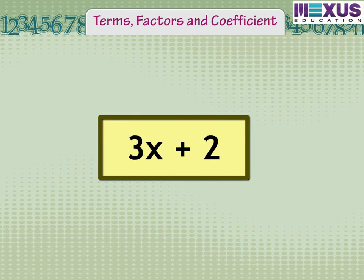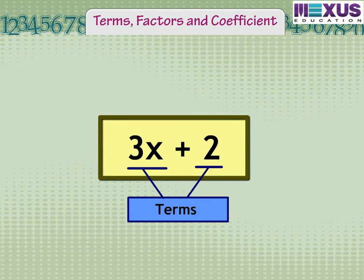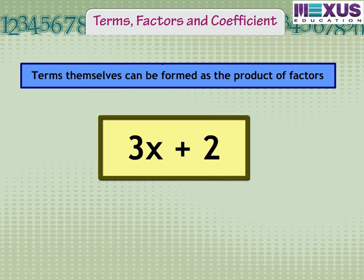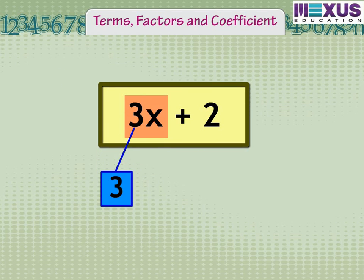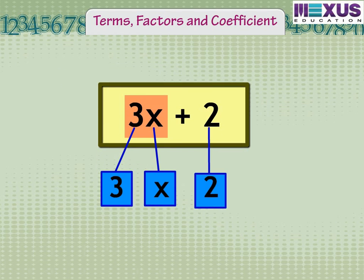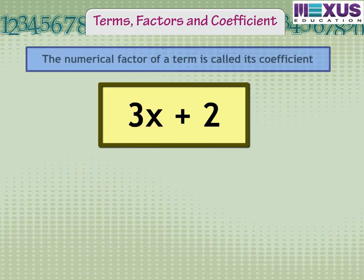Look at the expression 3x plus 2. This expression is made up of two terms: 3x and 2. Terms are added to form expressions. Terms themselves can be formed as the product of factors. Here the term 3x is the product of its factors 3 and x, and the term 2 is made up of just one factor, that is 2.